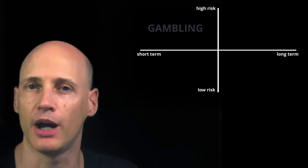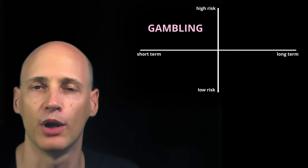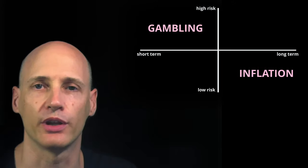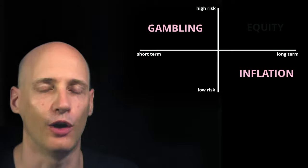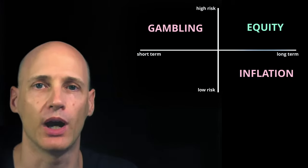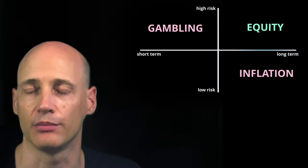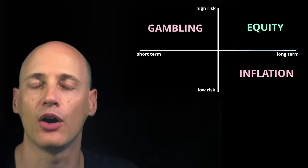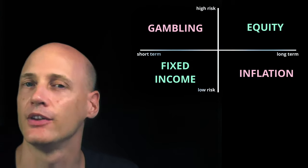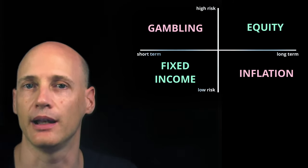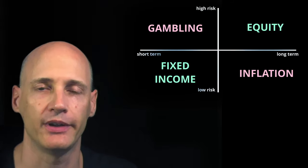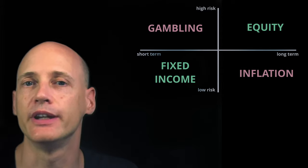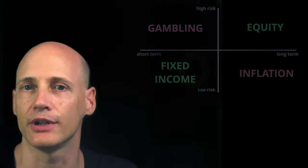Short term, high risk? You better go to a casino. Long term, low risk? That would be a savings account — but you lose out a lot of money to inflation, so you should not do that either. What does make sense is long-term equity investment: long term, medium to high risk. The asset class for that would be equity stock market index funds. And in the short run, where you can't accept much risk, the asset class would be fixed income. As far as ETFs are concerned, we have these two asset classes, and depending on your purpose, you go for equity or fixed income.